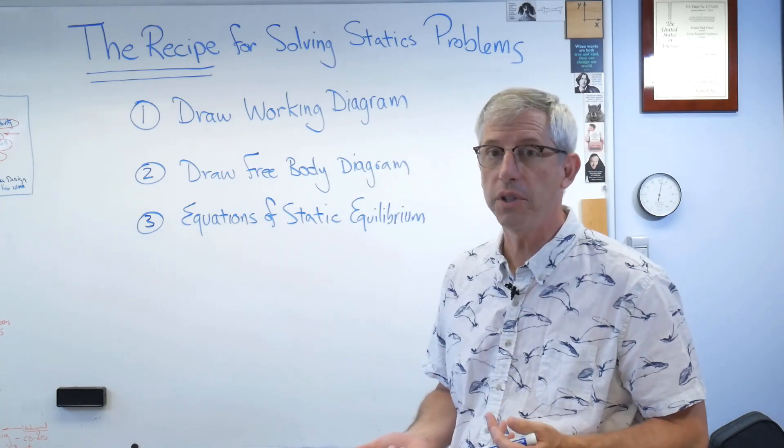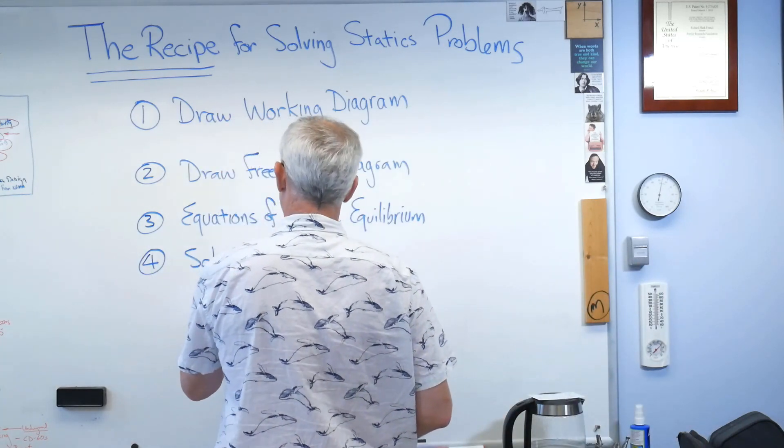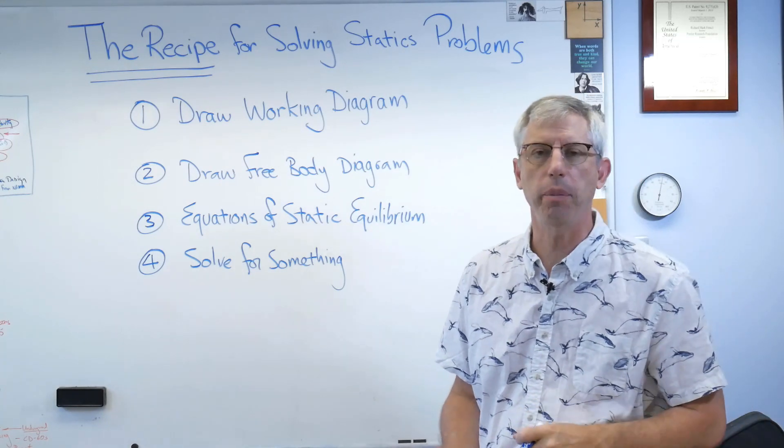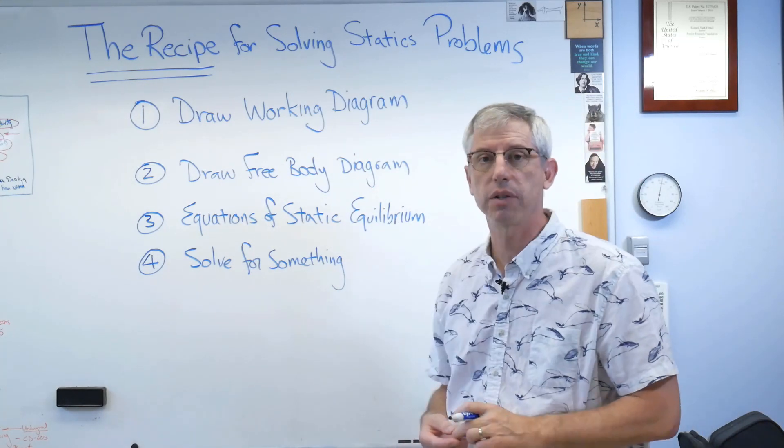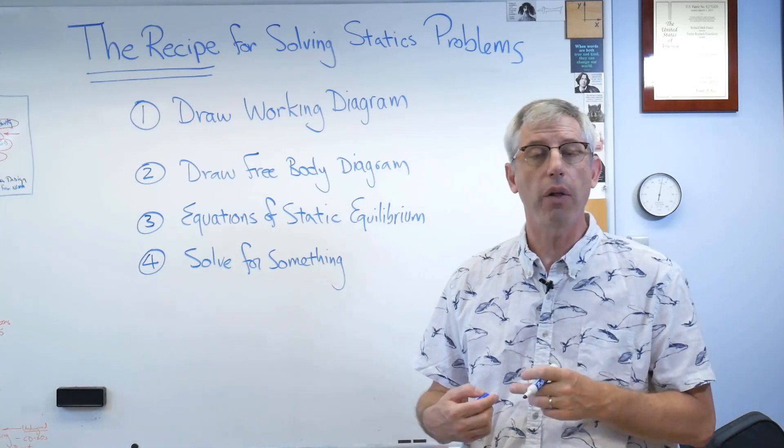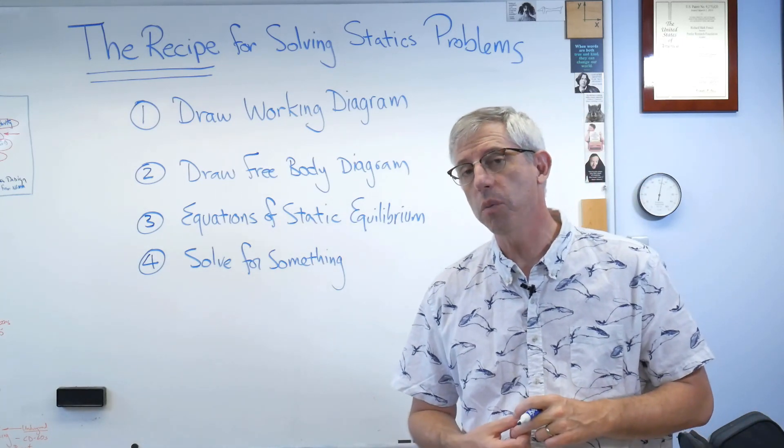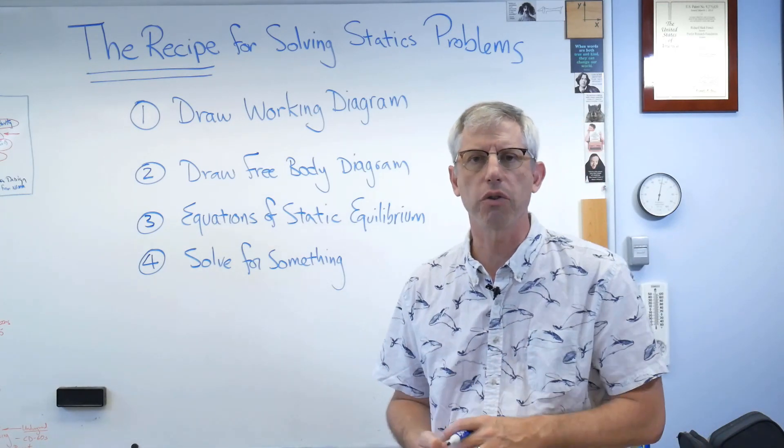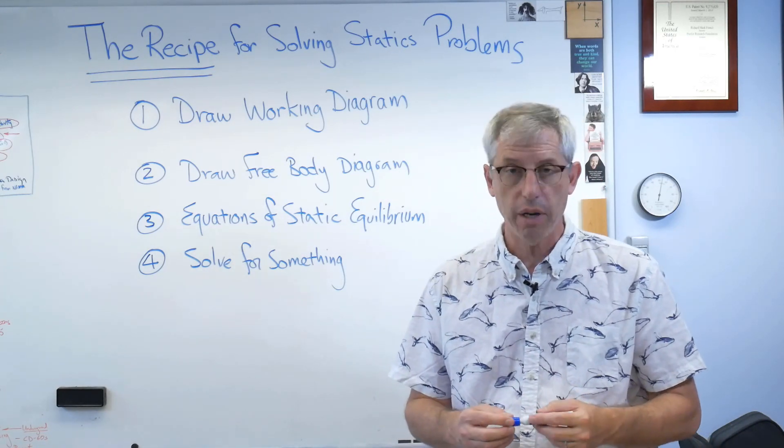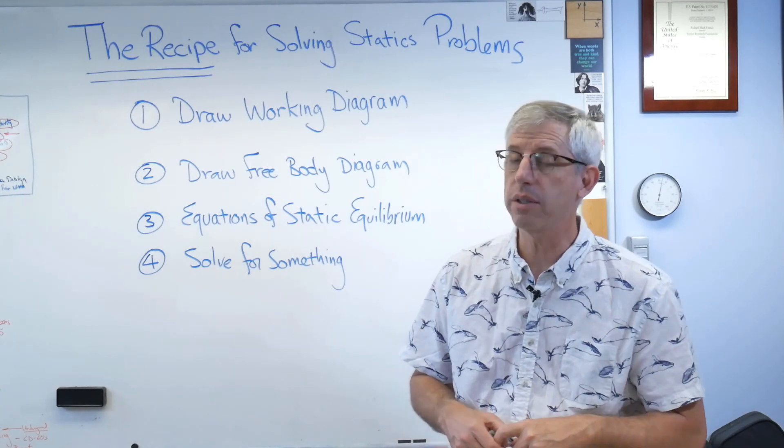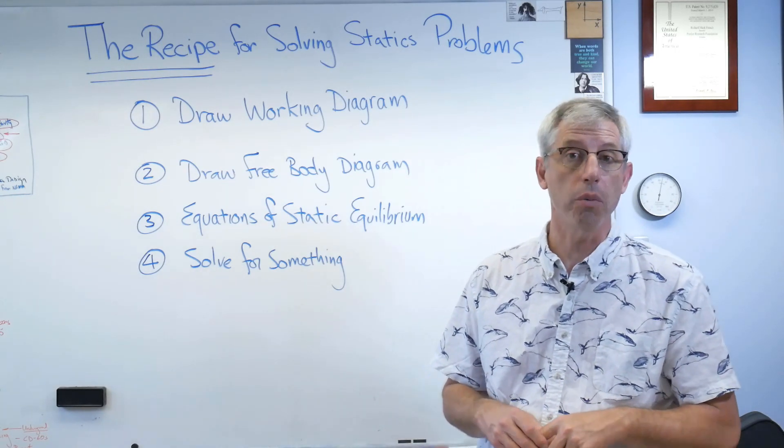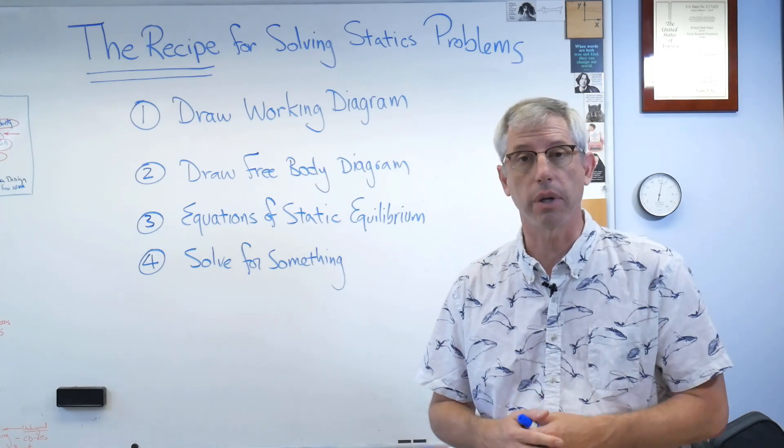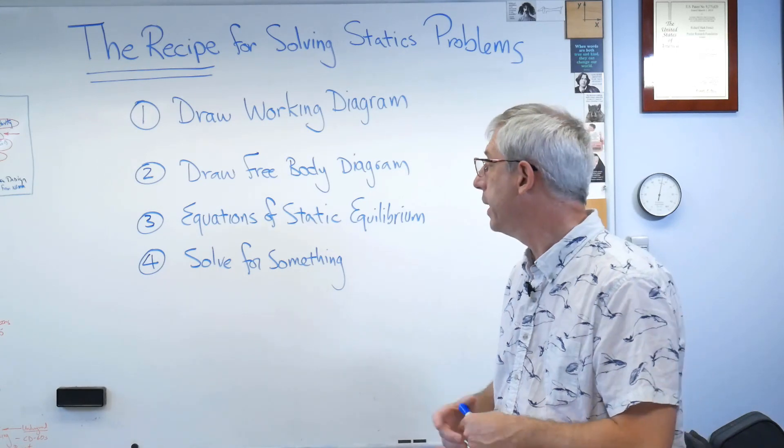So step four, solve for something. Solve for something. What are you trying to solve for? I don't know. It depends on what you were trying to figure out when you started this process to begin with. Now, if some propeller head like me gives you a homework problem, that's given in the problem statement. There'll be some force, some stress, some something you're trying to solve for. If you're trying to make your customer or your boss happy, you may need to ask them or they may be relying on your professional judgment to know what number has to come out of this process in order to solve another problem. So there's that one.